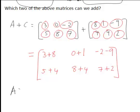So therefore, simplifying that, 3 plus 8 is 11, 0 plus 1 is 1, -2 minus 9 is -11, 5 plus 4 is 9, 8 plus 4 is 12, 7 plus 2 is 9. So therefore, our matrix A plus C will have the following form in this case.